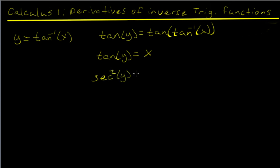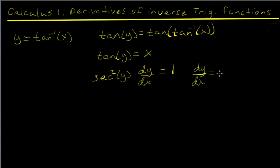Implicitly differentiating the left side, the derivative of tangent is secant squared of y times dy/dx equals one. Solving for dy/dx, we get one over secant squared of y. Now let's construct our triangle.